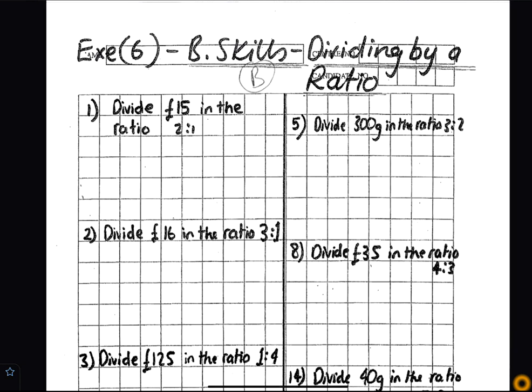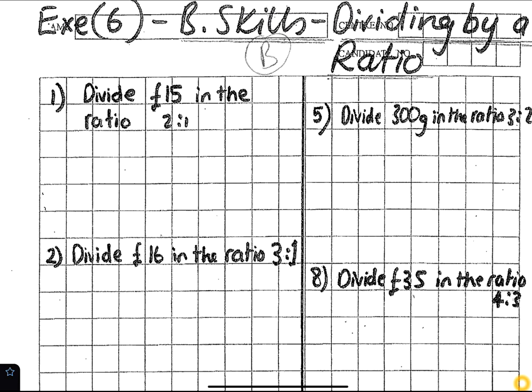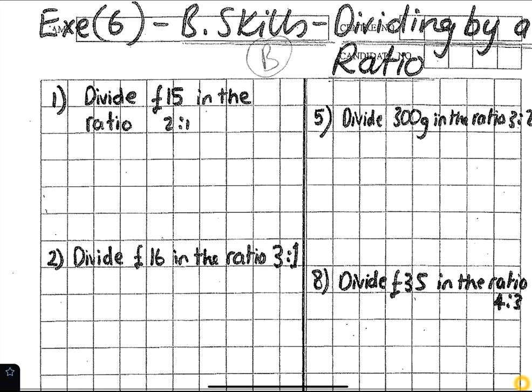Okay, to divide £15 in the ratio of 2 to 1, what do we do? First of all, we write down the ratio. What do we change it to? What do we do with the ratio? You add the ratio.